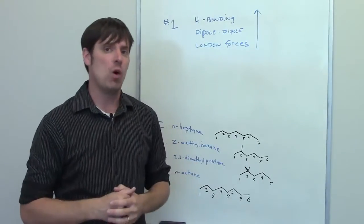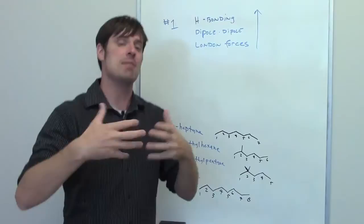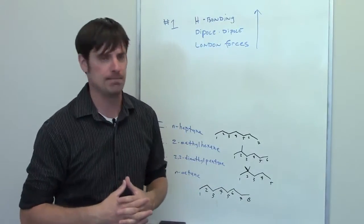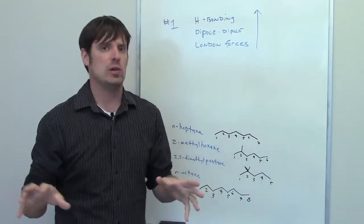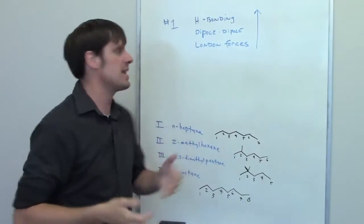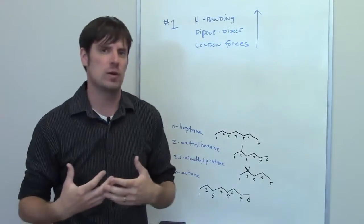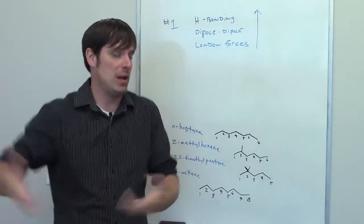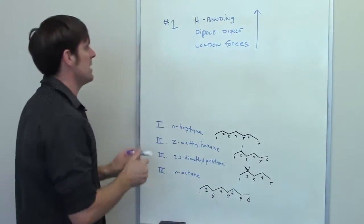Hydrogen bonding contributes to a significant amount of stickiness. These molecules stick together really, really tight. You have to pump in a ton of heat to get them to move apart, break apart, and convert from a liquid into a gas to boil. That's the primary reason why water, which has tons of hydrogen bonding, has such a high boiling point even though it has such a small relative molecular weight. Now if you're in a circumstance where you've got different molecules that all have the same kind of intermolecular force, how do you determine which will have the highest boiling point and which will have the lowest? For that we move to number two.